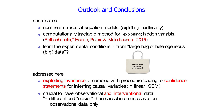Outlook and conclusions. Open issues include nonlinear structural equation models — the conceptual part remains the same but the statistical part becomes harder. Computationally tractable methods for exploiting hidden variable structures remain open. We could also ask whether we can learn the experimental settings rather than pooling all interventional data together. What we did address is exploiting invariance to produce a procedure with confidence statements. It is crucial to have both observational and interventional data — this is a different and certainly easier setting than causal inference from observational data alone.